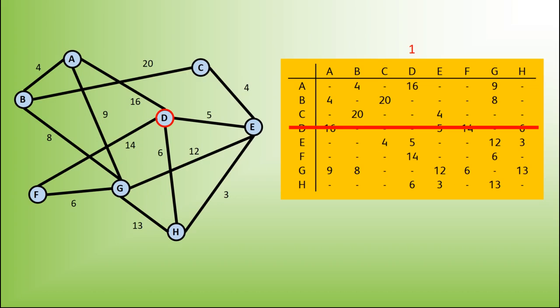We now look down the column that is numbered and find the number that is of minimum weight. In this case, it is the 5. This means that we are going to use the edge that goes from E to D within our minimum spanning tree.